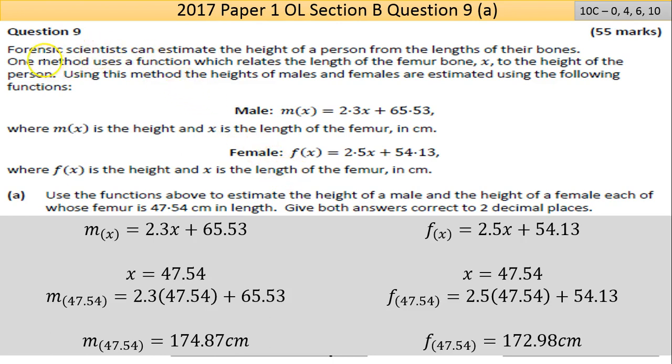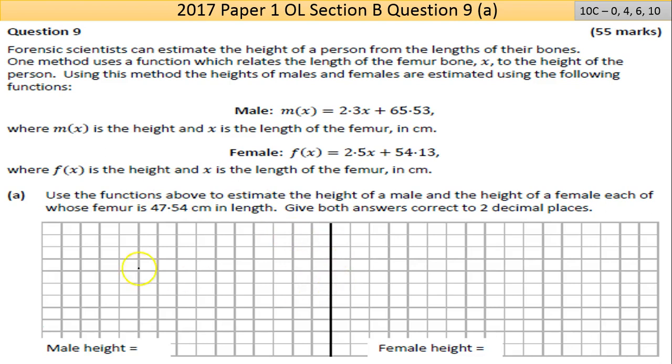Forensic scientists can estimate the height of a person from the length of their bones. One method uses a function which relates the length of the femur bone x to the height of the person. Using this method, the heights of males and females are estimated using the following functions. For males: m(x) = 2.3x + 65.53, and for females: f(x) = 2.5x + 54.13, where m(x) is the height and x is the length of the femur in centimeters.